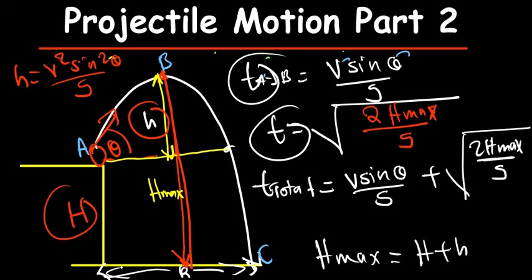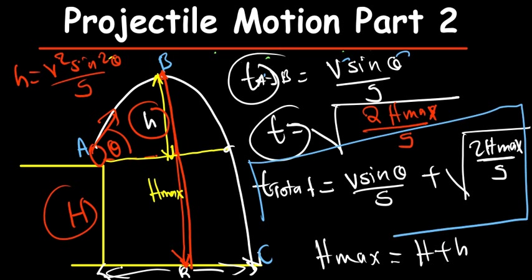This is the best formula I can give you for the total time for the third trajectory. They will not give you this formula in a test — you will never find this formula on a formula sheet. They may give you the individual component formulas, but not this combined one for the total time.